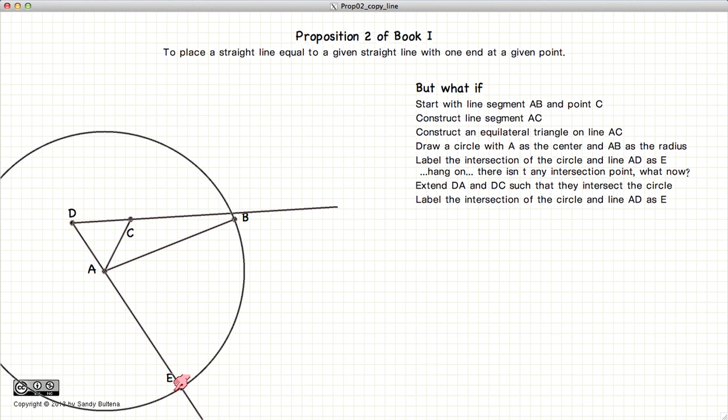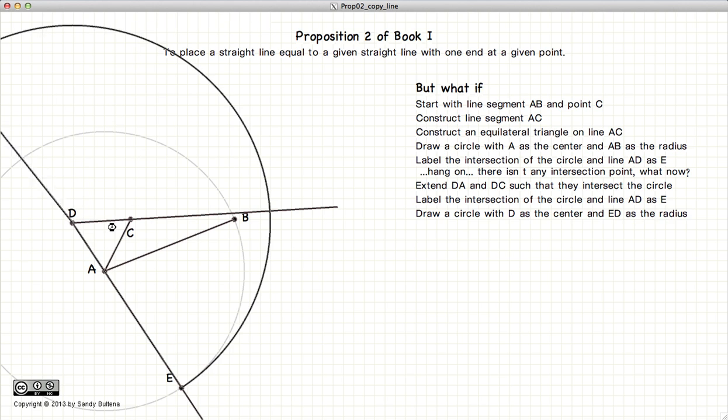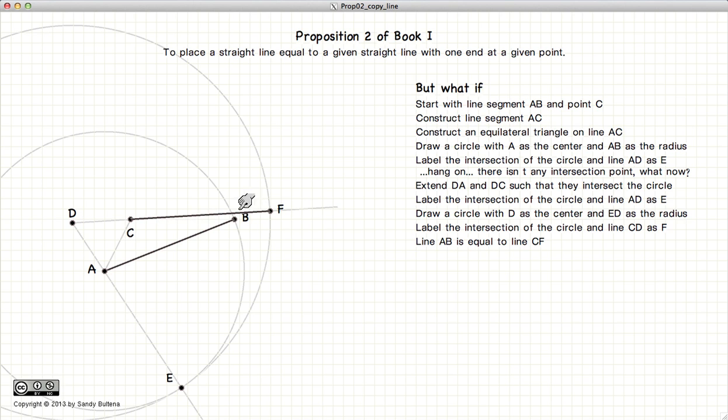Continuing on, we create another circle with DE as the radius and D as the center. And label the intersection as point F. And now we have AB is equal to CF.